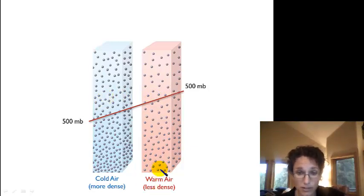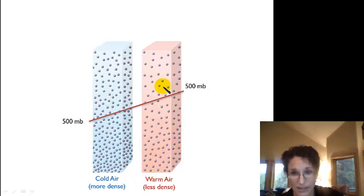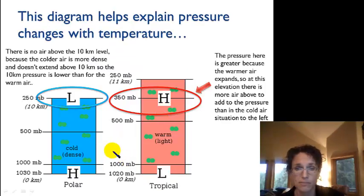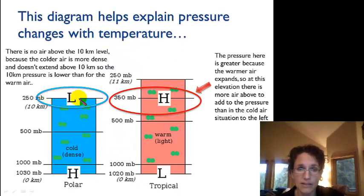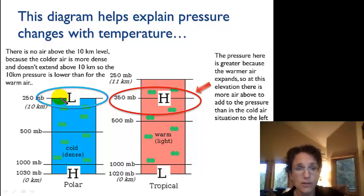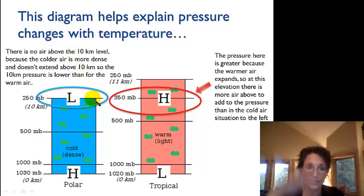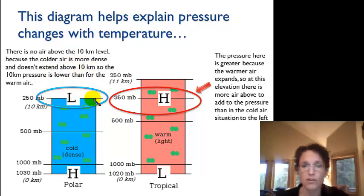At the surface, you might be experiencing lower pressure as that air is rising in that warm air column. Another way to think about it: in a warm air column and a cold air column at the same elevation, in the cold air column there's actually less air above you because that air is more dense and so it's squished down closer to the Earth's surface.